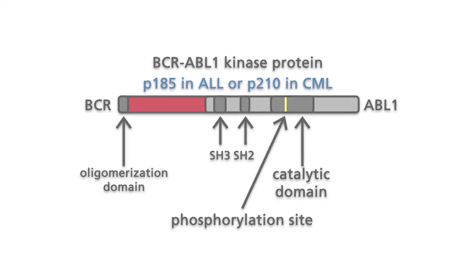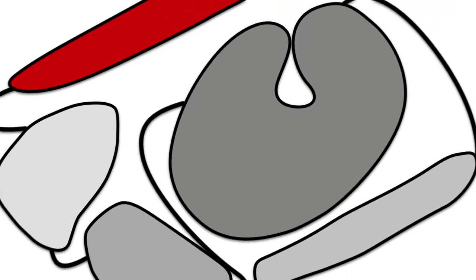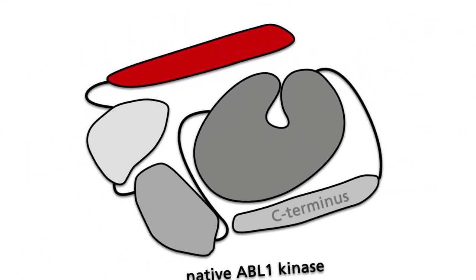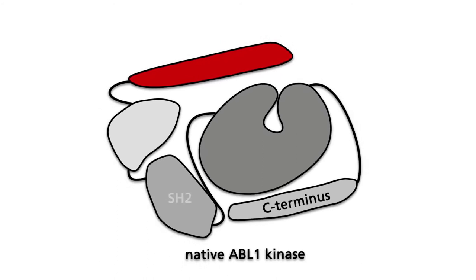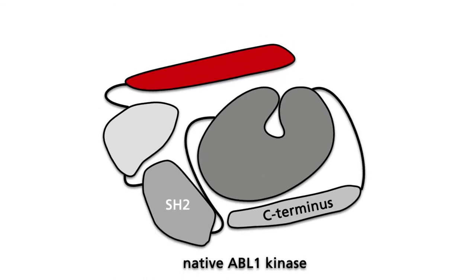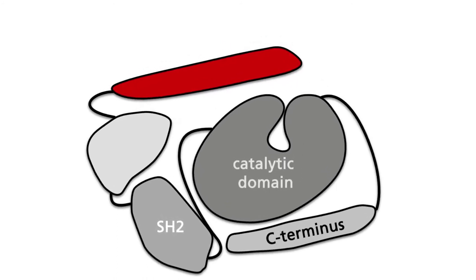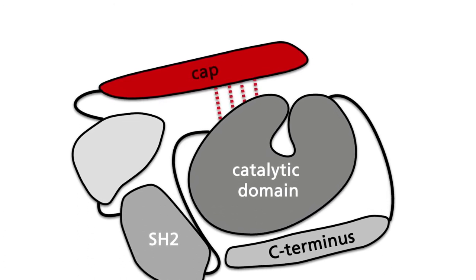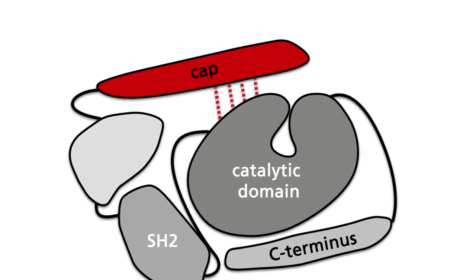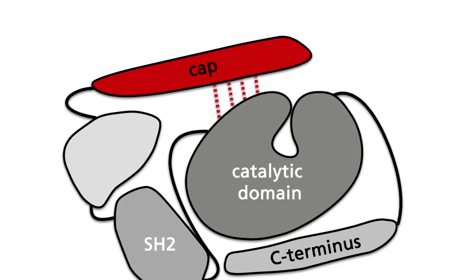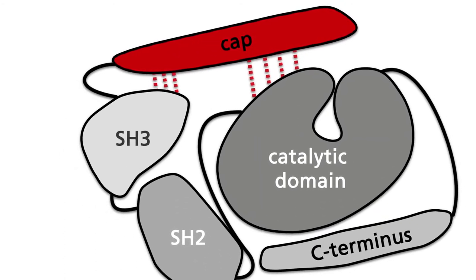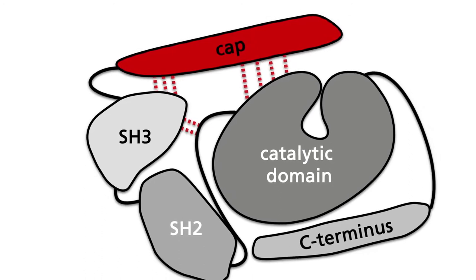The native protein ABL kinase consists of several structural domains. This simplified animation shows that the domains are packed in a compact tertiary structure. In this structure, the catalytic domain is stabilized in its closed state by what is called the CAP domain. From the CAP domain, hydrogen bonds and ionic interactions spread to the SH3 and catalytic domains.